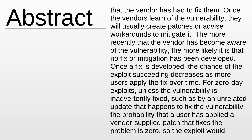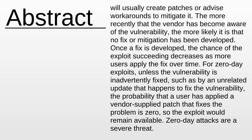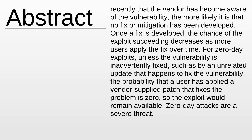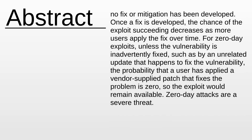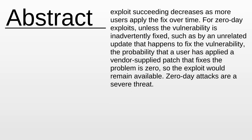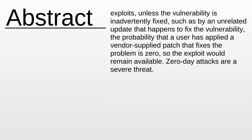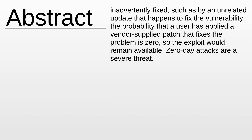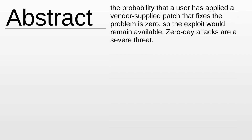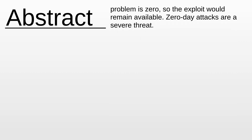Once the vendors learn of the vulnerability, they will usually create patches or advise workarounds to mitigate it. The more recently that the vendor has become aware of the vulnerability, the more likely it is that no fix or mitigation has been developed. Once a fix is developed, the chance of the exploit succeeding decreases as more users apply the fix over time. For zero-day exploits, unless the vulnerability is inadvertently fixed, such as by an unrelated update that happens to fix the vulnerability, the probability that a user has applied a vendor-supplied patch that fixes the problem is zero, so the exploit would remain available.